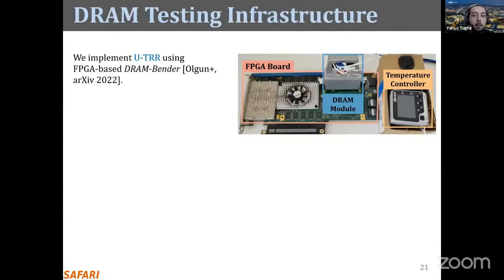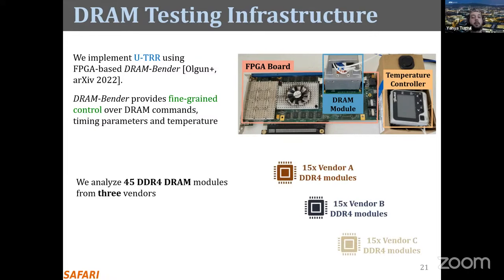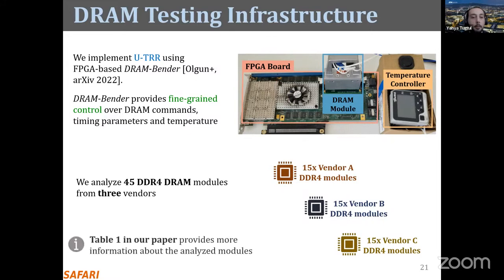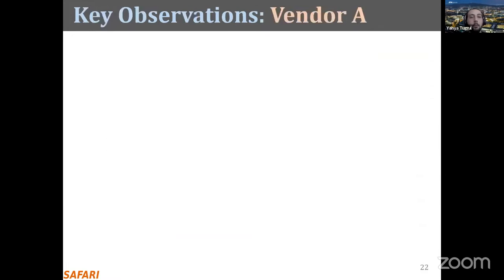To implement UTR, we conducted real DRAM experiments using an FPGA-based DRAM testing infrastructure called DRAM Bender, which provides fine-grained control over DRAM commands, timing parameters, and temperature. In our study we tested 15 DDR4 DRAM modules from each of the three major DRAM vendors — 45 modules total. The paper provides a detailed table with information about the tested modules.